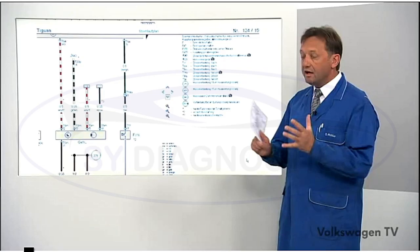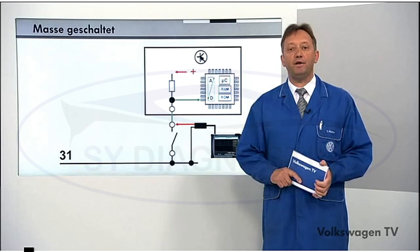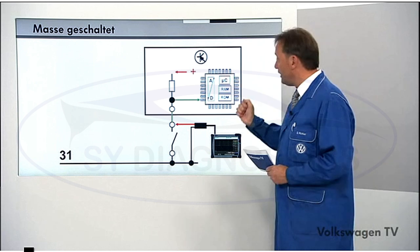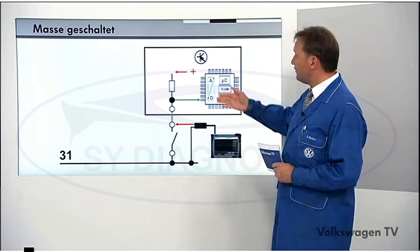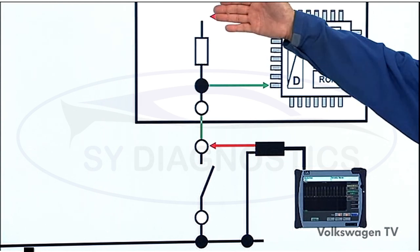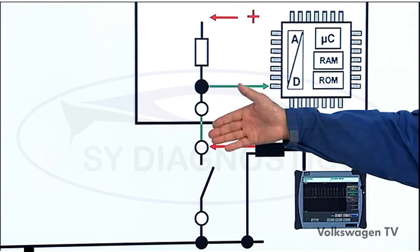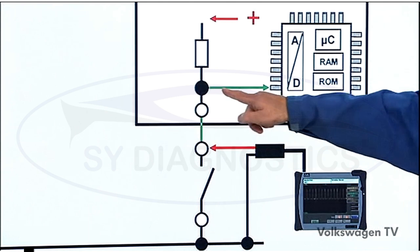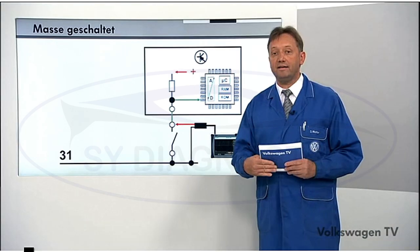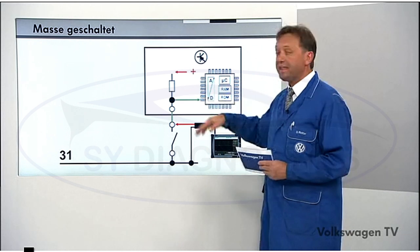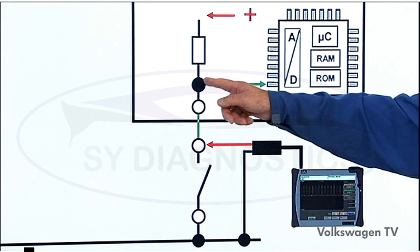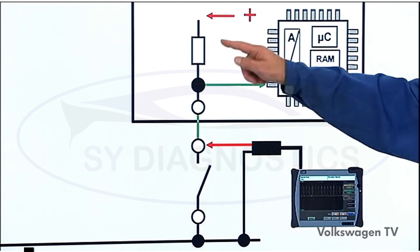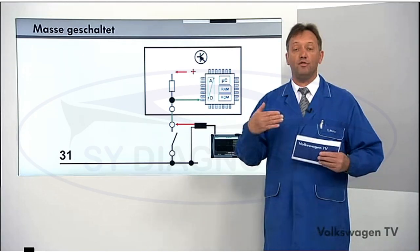What are the electrical differences to our first example in which positive is switched? Let's look at the structure of a control unit. You know the analog-digital converter for the signals, the microcontroller, the read-only memory or random access memory. If we have a switch that is earth-switched, we get a positive potential from the control unit through the high ohmic resistor to the control unit outlet. The controller measures whether the voltage is really applied - if it is, the controller knows the switch is open. If this switch is closed, there is a voltage drop because of the high ohmic resistor in the circuit, and the control unit knows that the switch is closed.